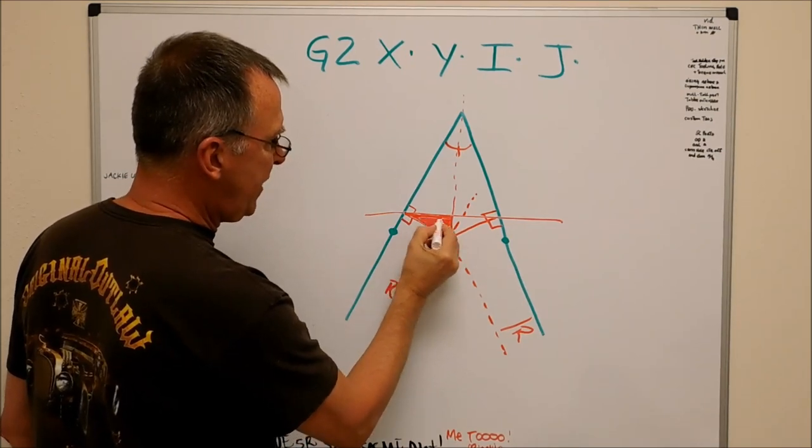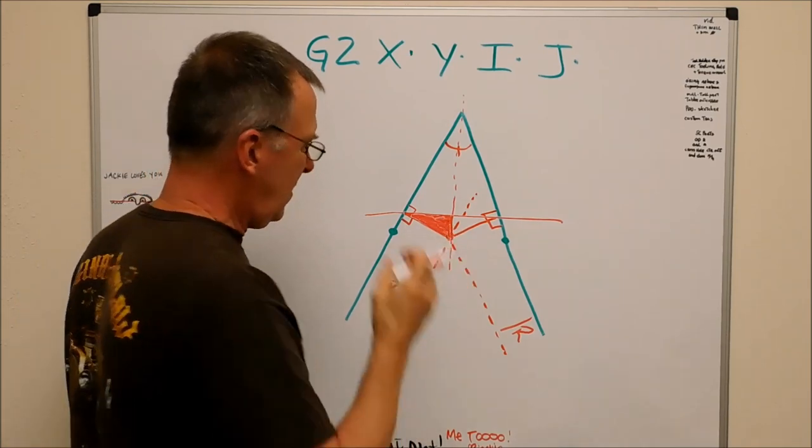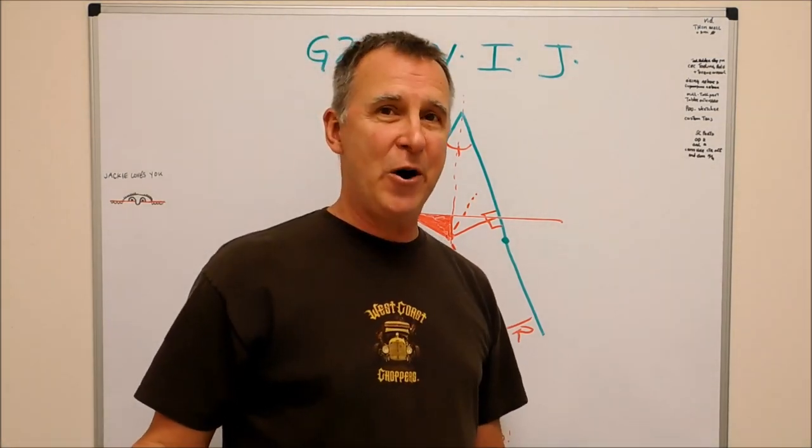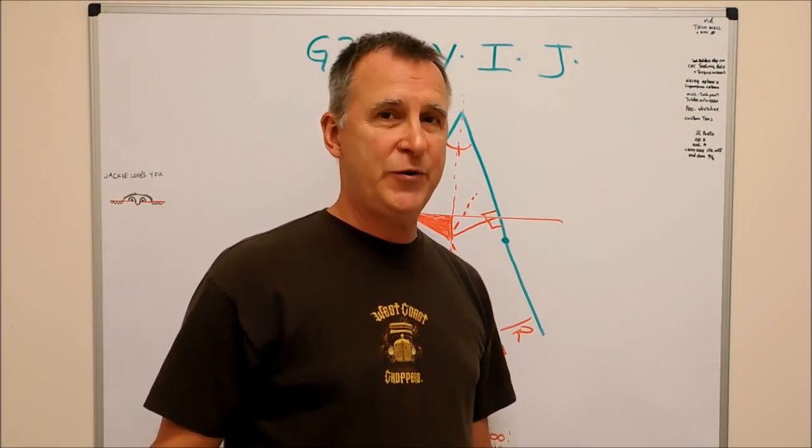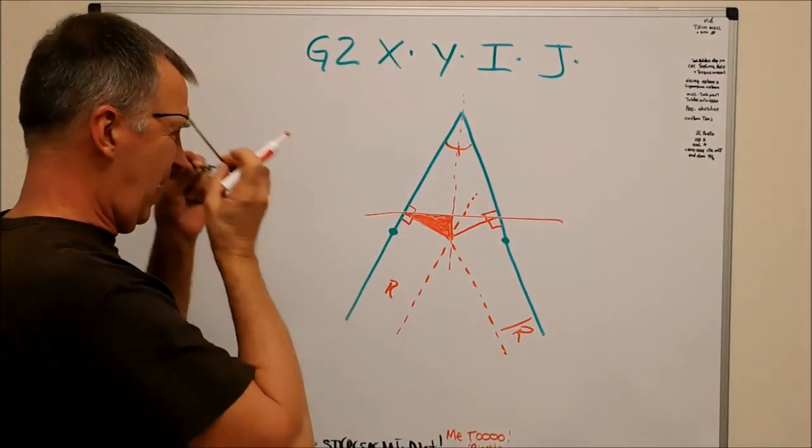This is the triangle that you need to figure out with your calculator, with your trig book, with your app, with your online chart, or wherever you're going to get your trig values from. This is the triangle you need to figure out.